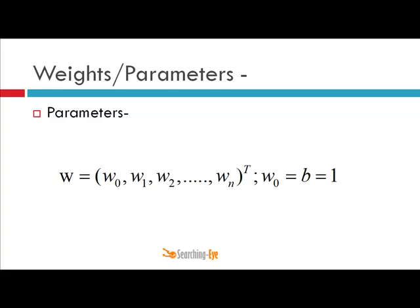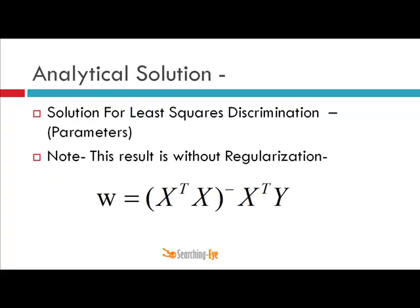This is your parameter vector. And this is a result of using least square error function, that is w equals X transpose X inverse and X transpose y. We can also derive this using maximum probabilistic interpretation.